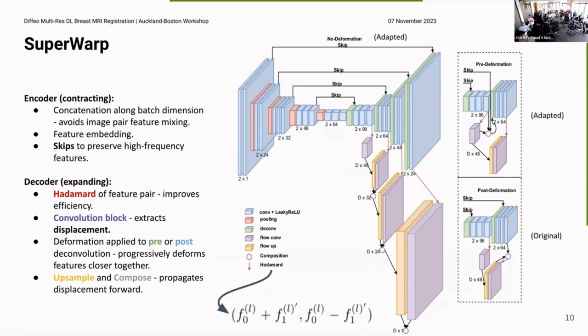So for context, this is SuperWarp. It's a U-Net-based architecture. The nice things about this is the images can keep in one of the best dimensions of the image features not mixed. In this contracting path, this is just standard U-Net encoder. And then in the decoder, that's where the magic happens. At each decoder block, you extract the flow, and then propagate it forward. So you end up with the final deformation being a composition of all your previous multi-resolution deformations.